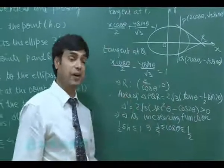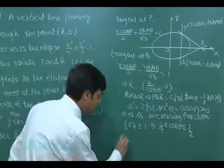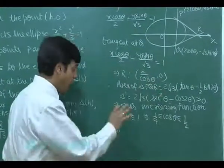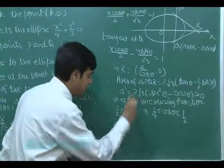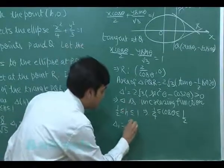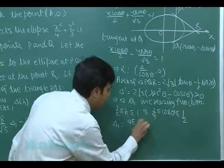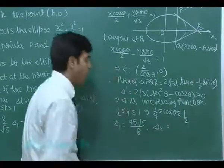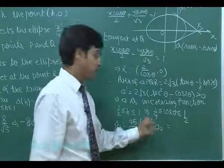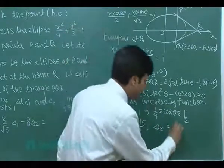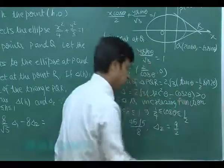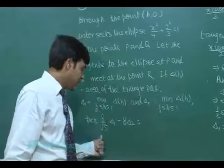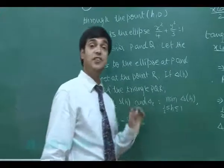So, maximum that is Δ₁. We can find Δ₁ on substituting cosθ as 1/2 in this area. On substituting, we get Δ₁ = 45√5/8. Similarly, on substituting cosθ as 1/4, we get Δ₂ on simplification 9/2.